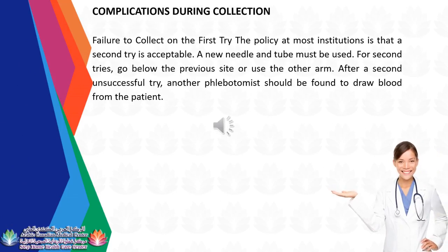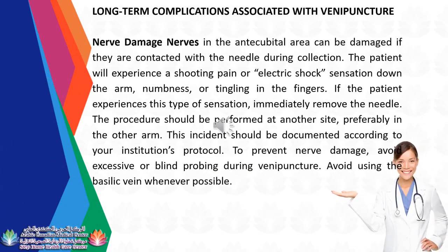Failure to collect on the first try: The policy at most institutions is that a second try is acceptable, using a new needle and tube. For second tries, go below the previous site or use the other arm. After a second unsuccessful try, another phlebotomist should be found. Long-term complications — Nerve Damage: Nerves in the antecubital area can be damaged if contacted with the needle. The patient will experience a shooting pain or electric shock sensation down the arm, numbness, or tingling in the fingers. Immediately remove the needle, perform the procedure at another site, and document the incident. To prevent nerve damage, avoid excessive or blind probing and avoid using the basilic vein whenever possible.